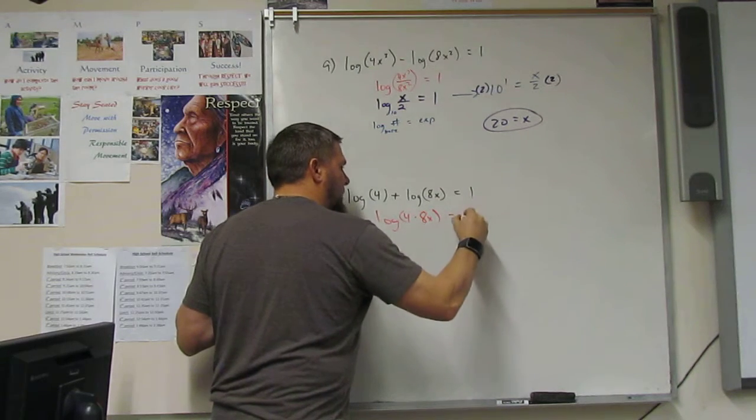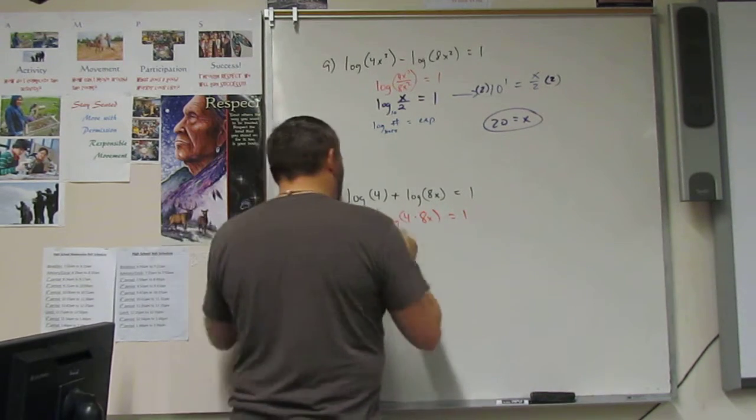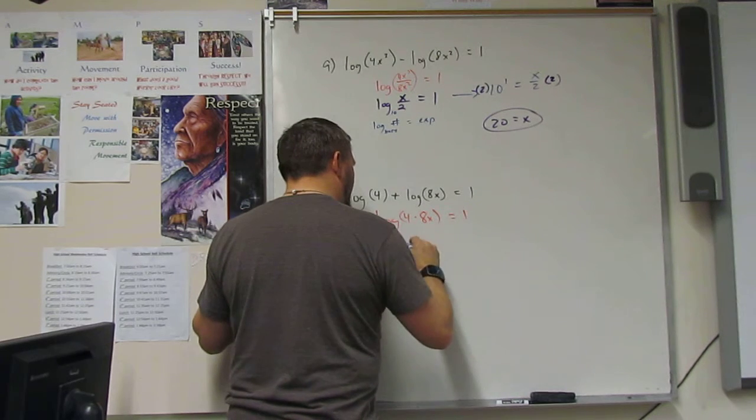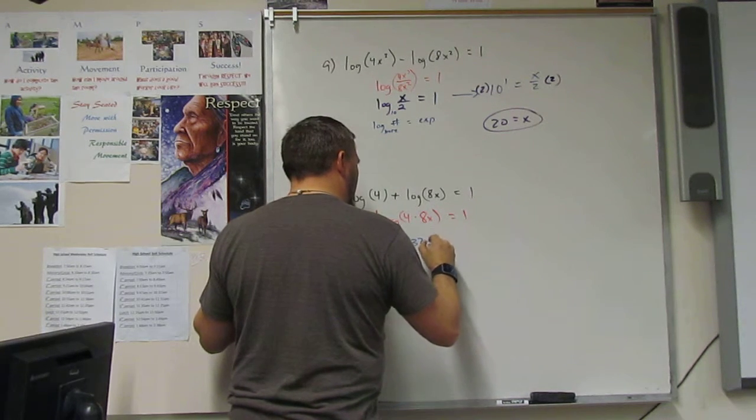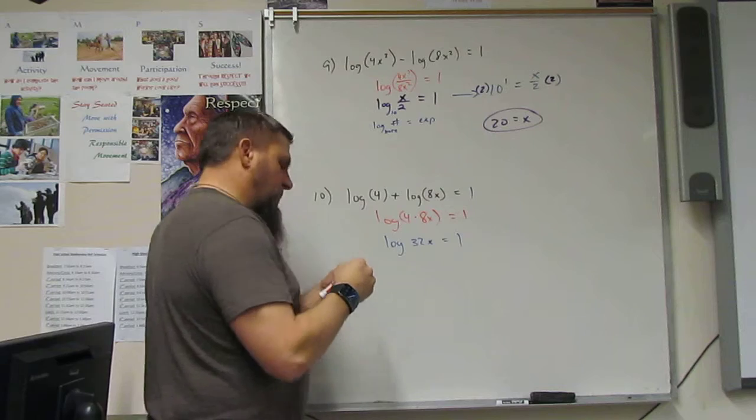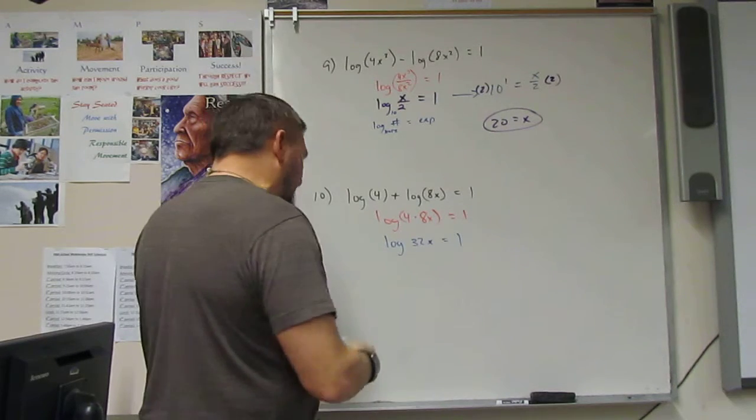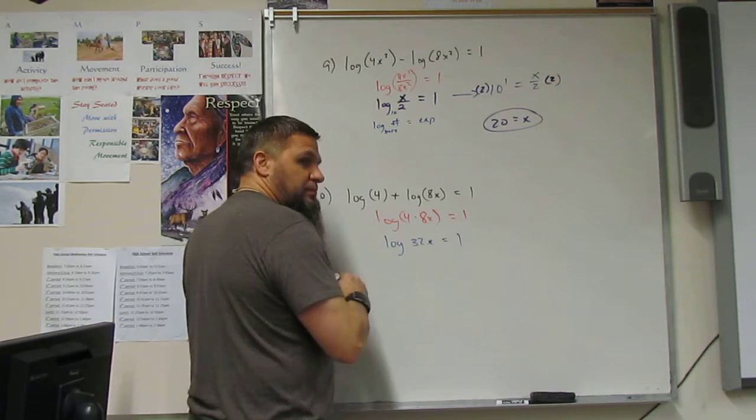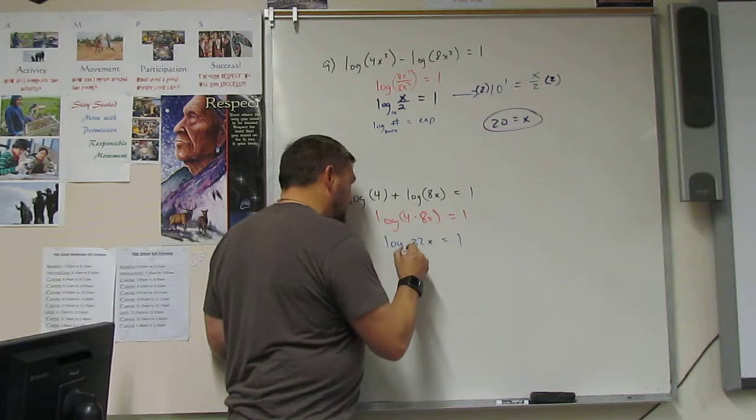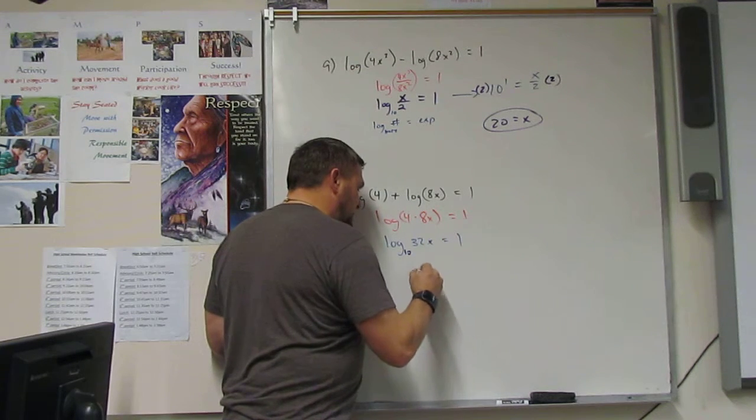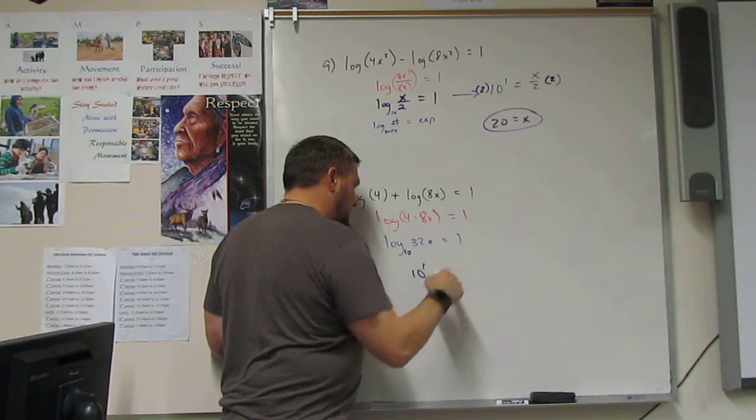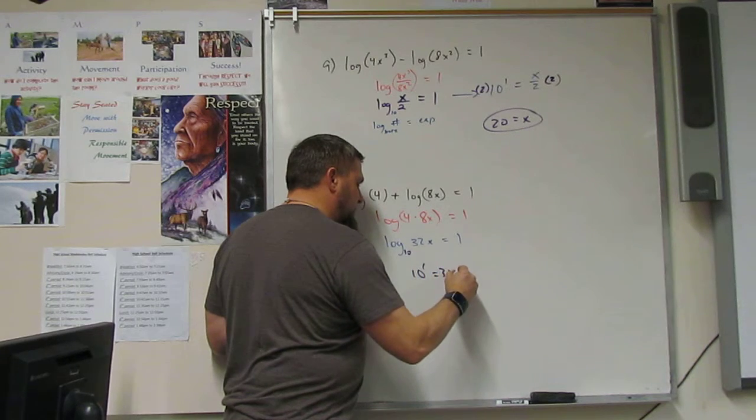Equals 1. So I get log of 32x equals 1. What's the base? 10. So I've got 10 to the 1 power is equal to 32x.